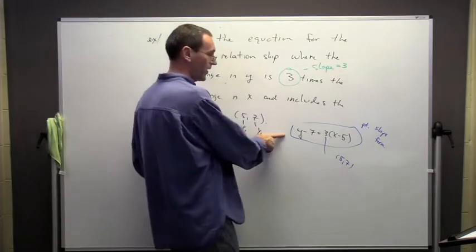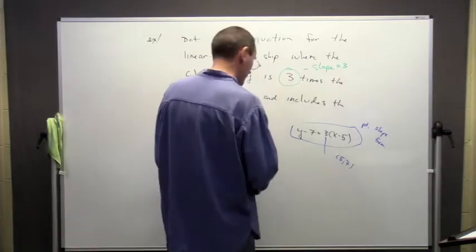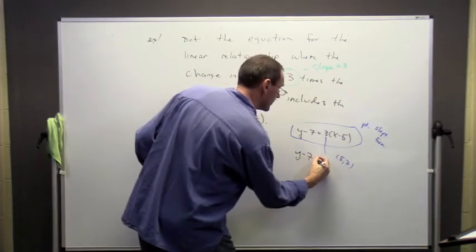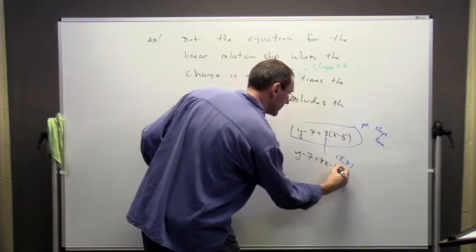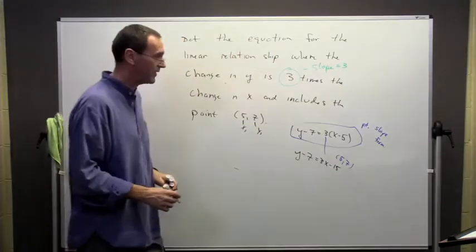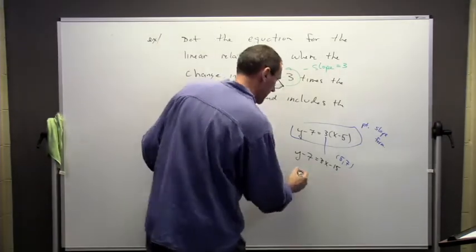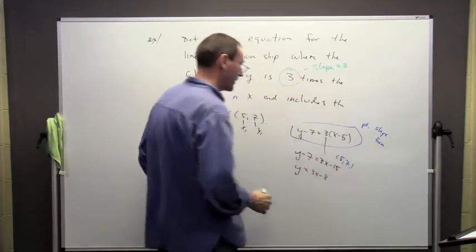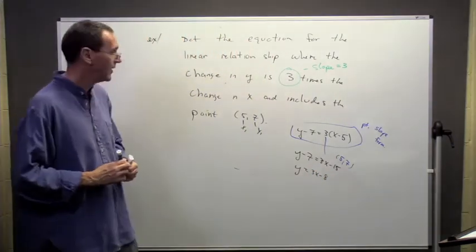Now, there's all kinds of algebra games we can play with this. So I can do this. I can multiply through by the 3 to get that. I can add the 7 to both sides. Look at that.